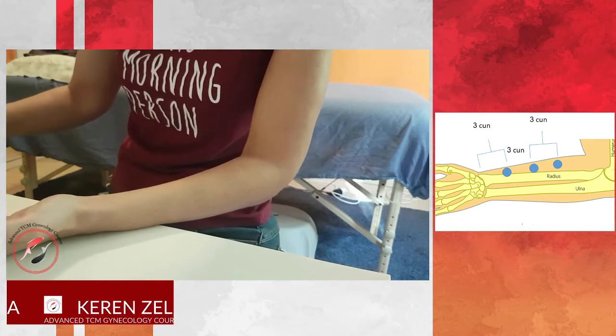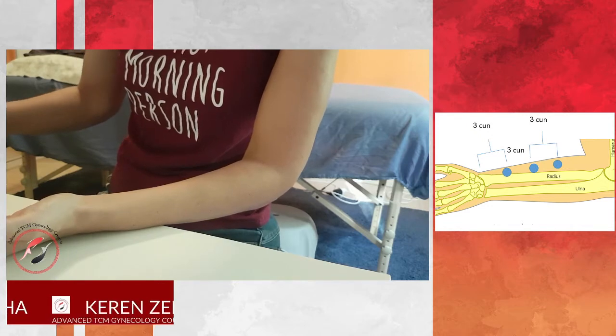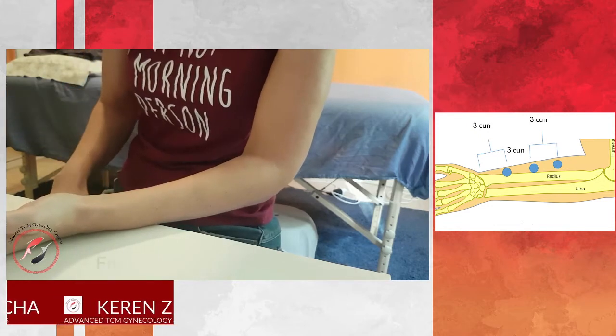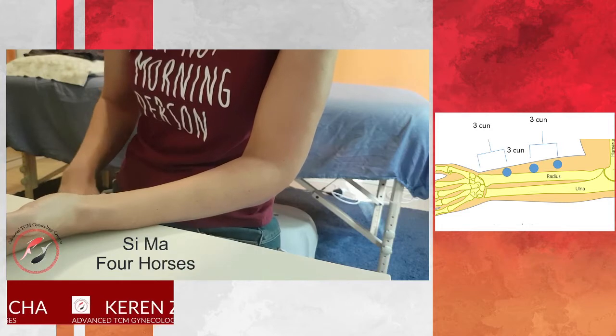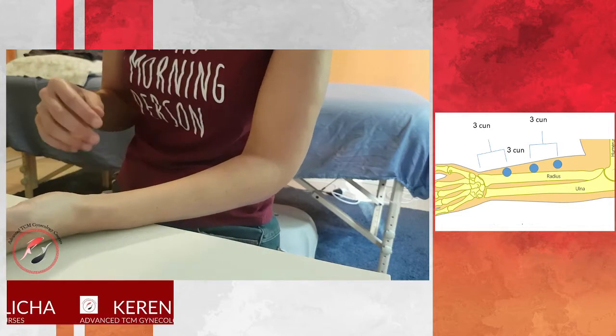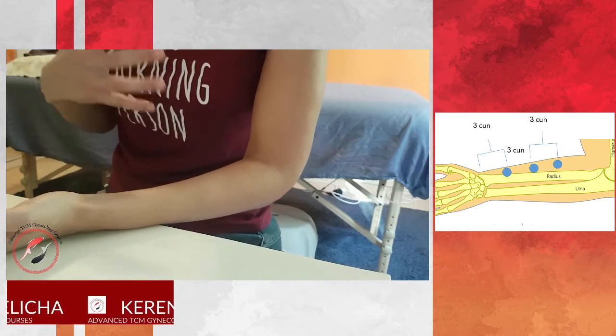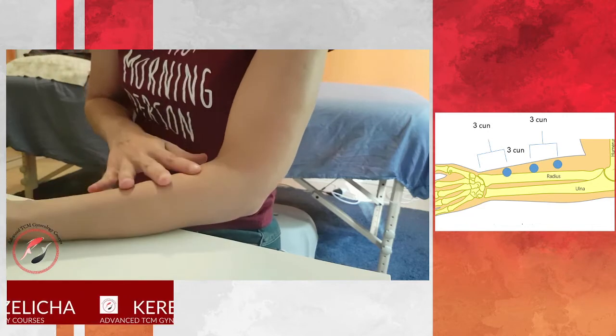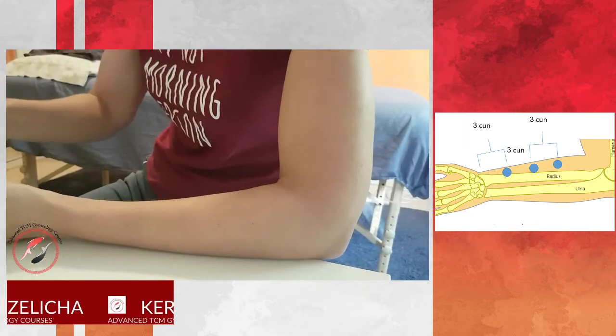Usually also, asthma points, the four horses points are located on the thigh, which are also indicated for lung problems, lung issues.